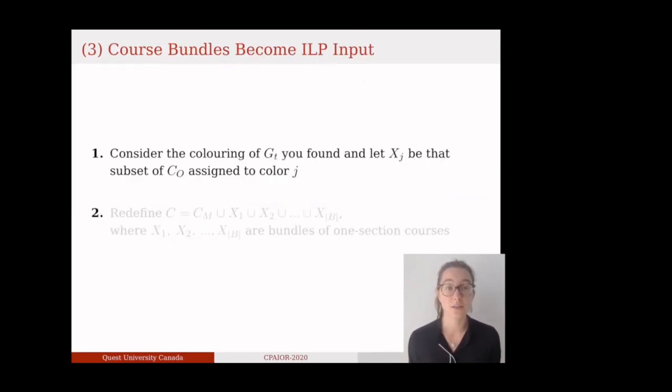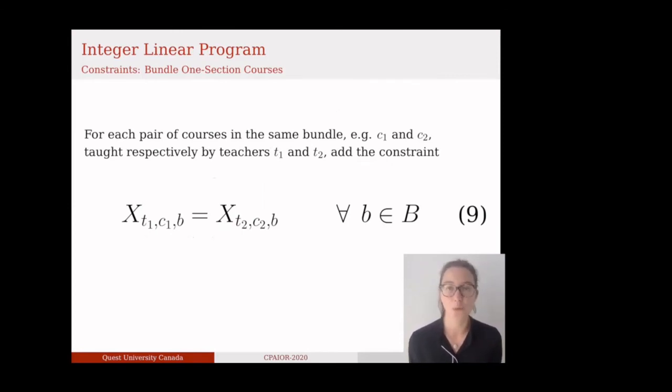Step 3. These course bundles become the input we feed into our ILP. Once we have found a B coloring of G_I, for each bundle, let X_J be the set of courses in CO assigned to color J. Now, redefine the set C to be equal to the union of CM, X_1, X_2, all the way to X_B, where X_1, X_2, and so on are color-coded bundles of one-section courses, which we can compatibly allocate to the same block in our optimal schedule. To account for the bundling, we added a ninth constraint to the ILP. That is, for every pair of courses C1 and C2 in the same bundle, we equated the binary variable X of C1 to the X of C2 for all blocks. Thus ensuring that courses C1 and C2 are assigned to the same block, in that they are bundled together.